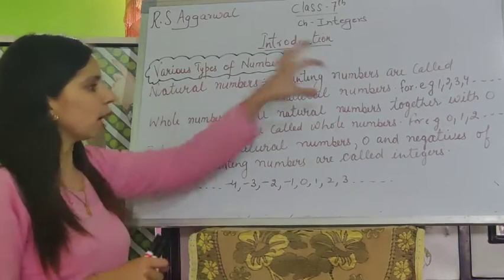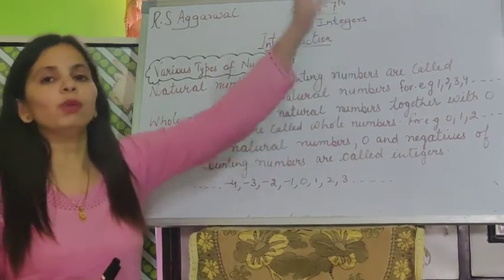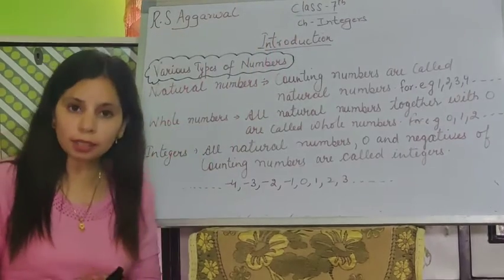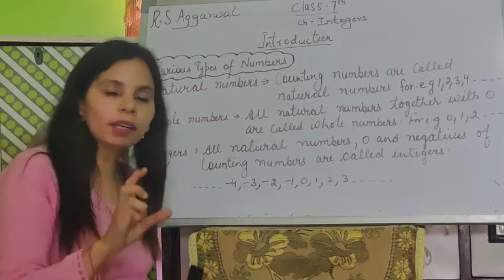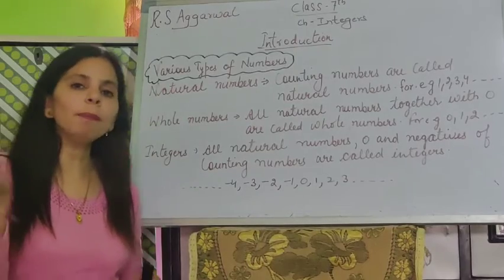Whole number starts from 0: 0, 1, 2, 3, etc. Now, is the difference between both clear? Natural number starts from 1, and whole number starts from 0.